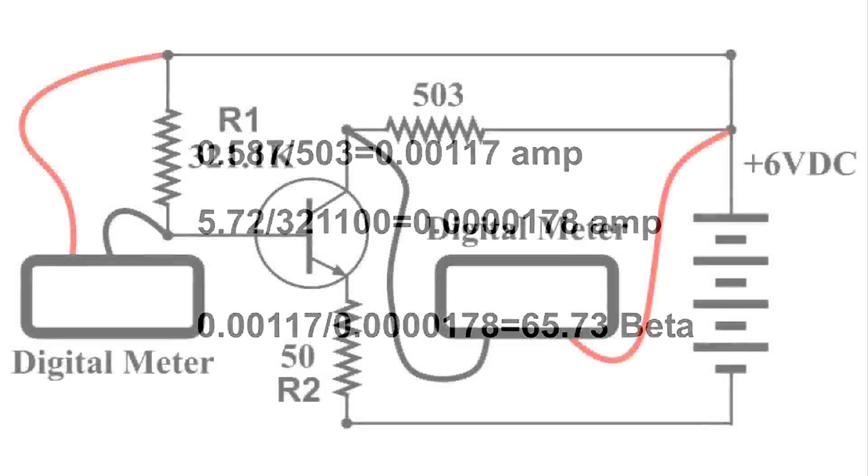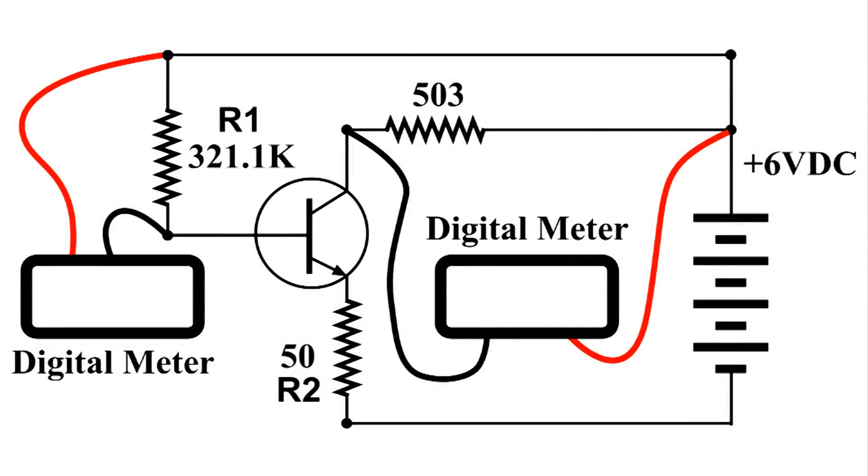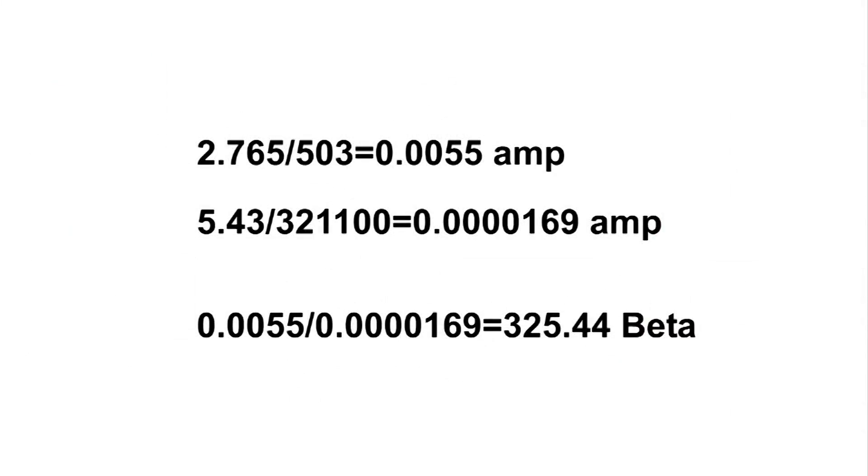Now my next setup, I've just got another transistor that I'm going to plug into this exact same setup. And here's the results for it. We've got 2.76 volts across the 503 ohm resistor and we have 5.43 volts across R1. And here are those results. This transistor has a beta and amplification factor of 325.44.